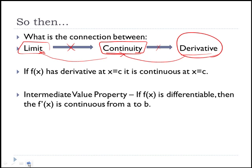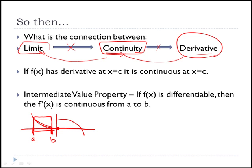There is also the Intermediate Value Theorem, which says you don't have to look at the entire function — you can look at a piece of it on an interval from a to b. Even if the entire function isn't continuous, if a section from a to b passes all tests and has a derivative for all points in that interval, then you can say it has a derivative, is continuous, and has limits on that interval.